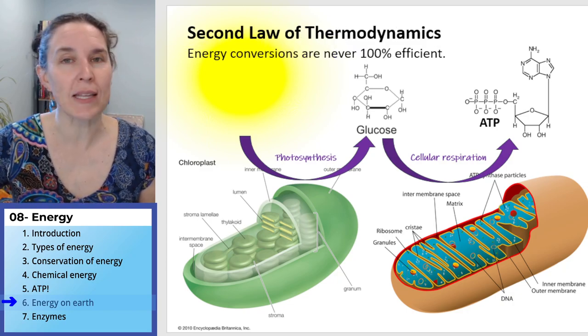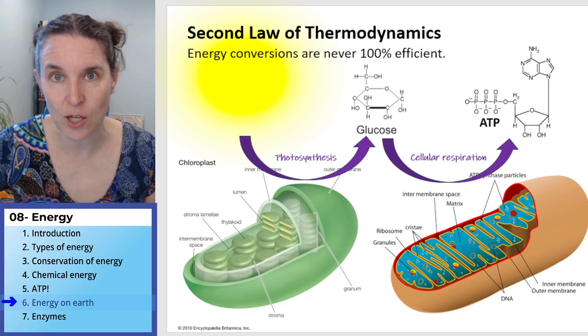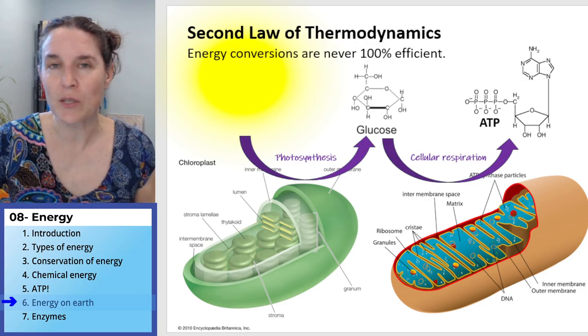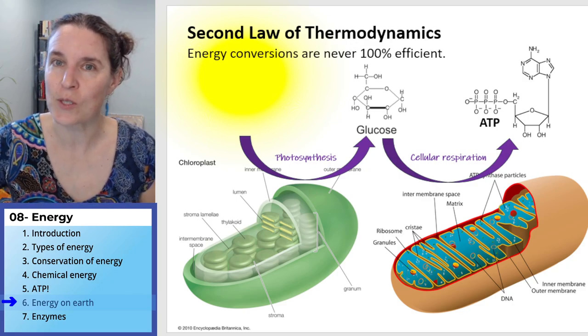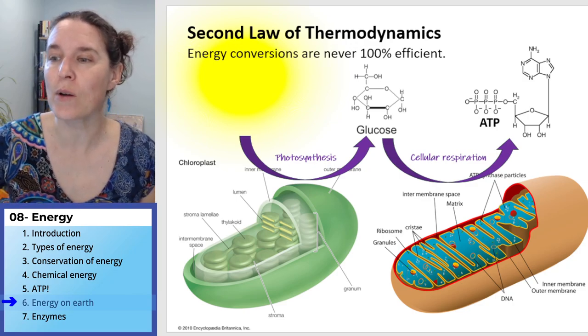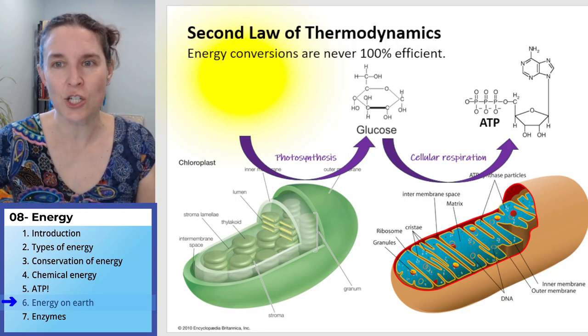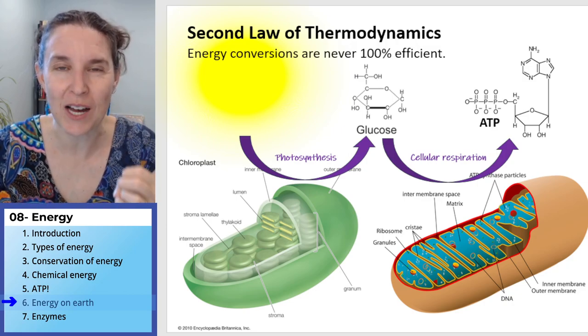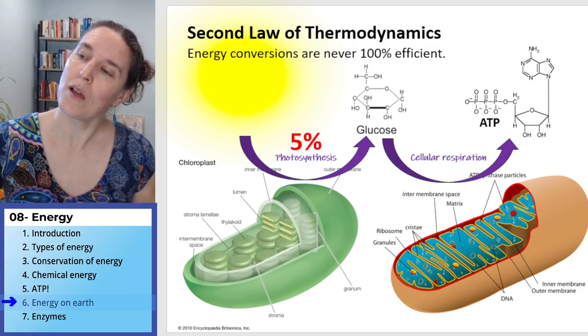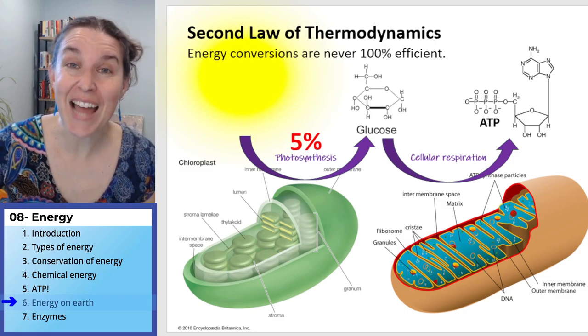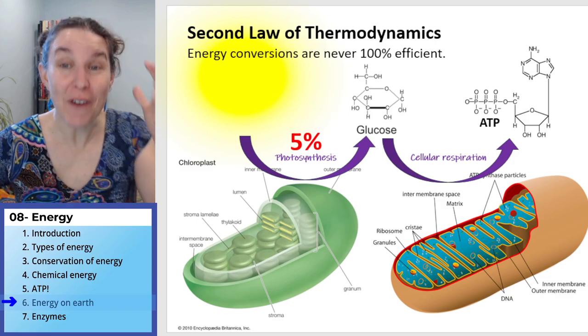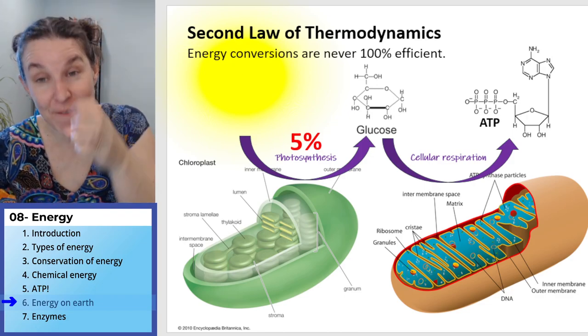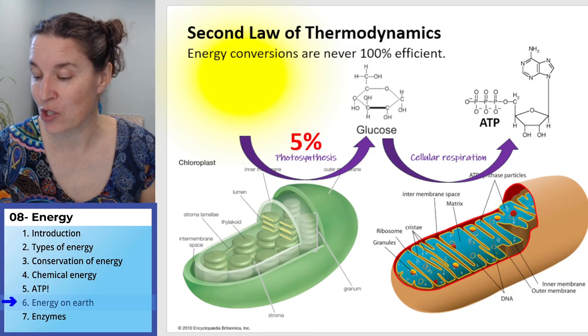And what we know is that these energy conversions aren't 100% efficient, which means all the energy in the sun was not able to be transferred into glucose molecules. And does anybody want to guess how efficient is this? How much of the energy from the sun is captured in the chemical bonds of the glucose molecule?